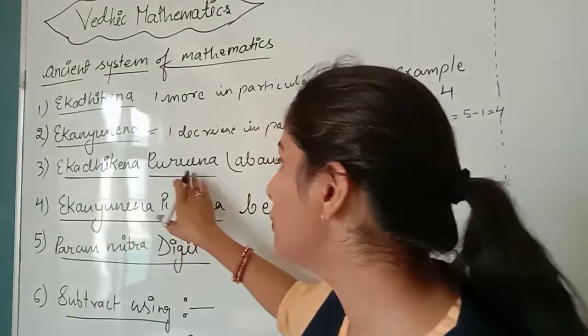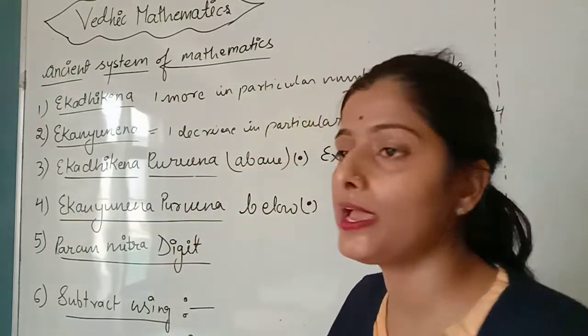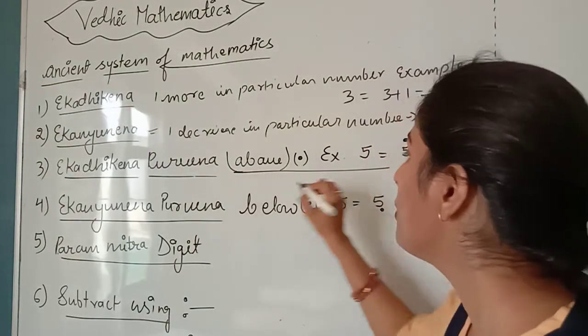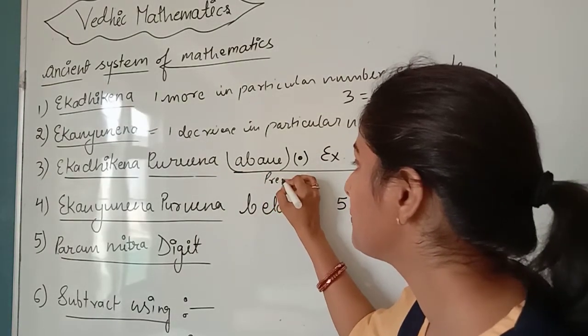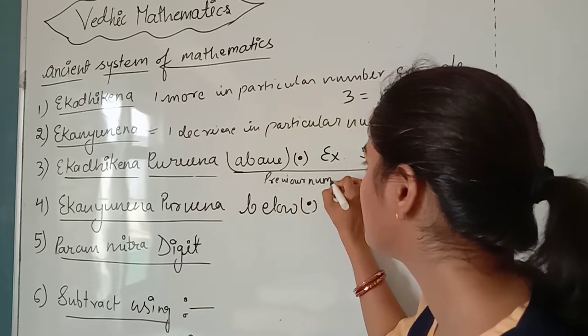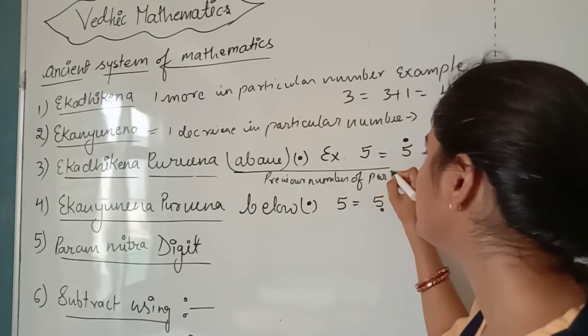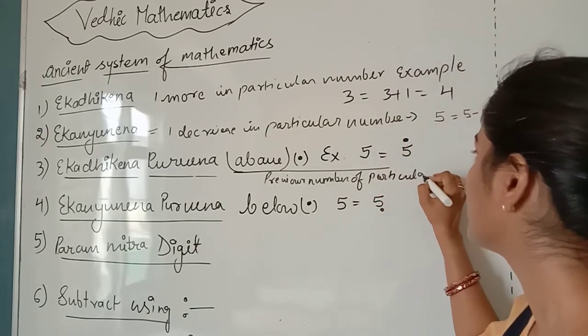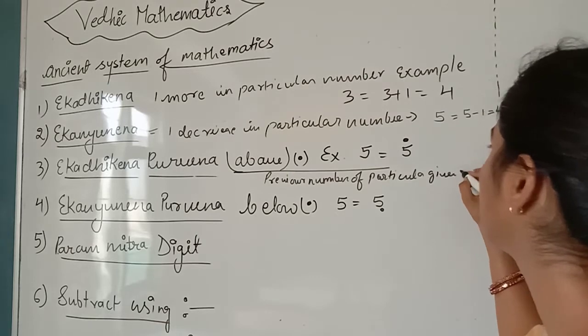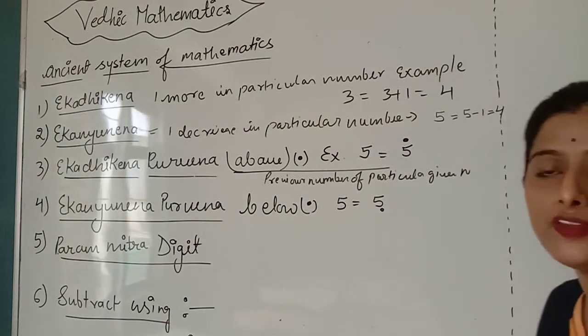Now, Ek Adhiken Purvin. What is Ek Adhiken Purvin? Purvin means previous. So, this refers to the previous digit of a particular given number.